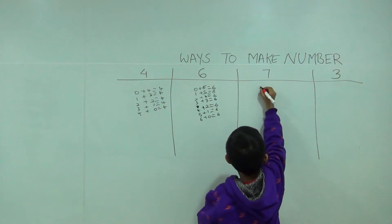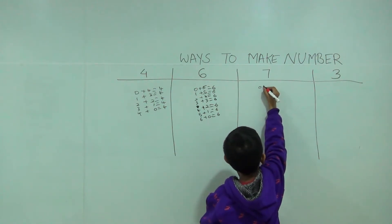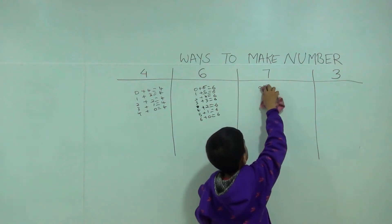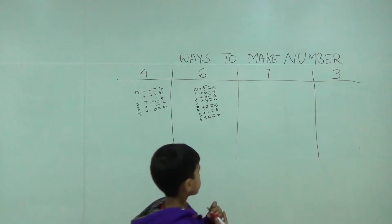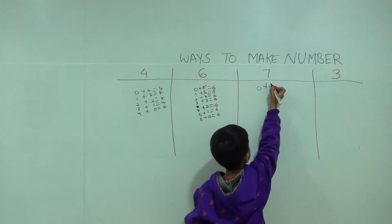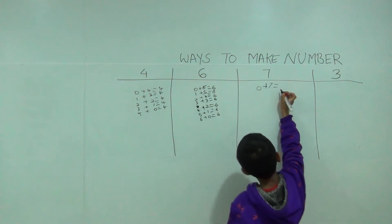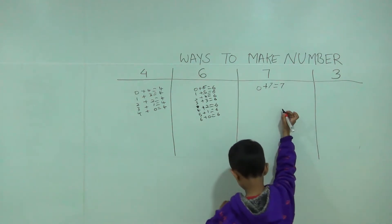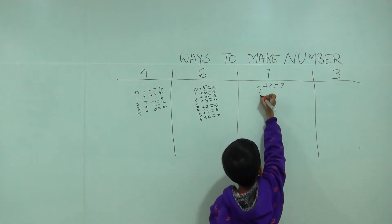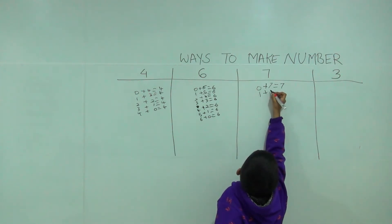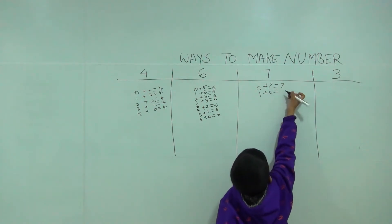Seven. Zero plus seven is equal to seven. One plus six is equal to seven.